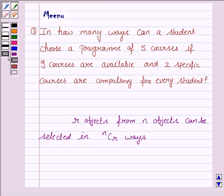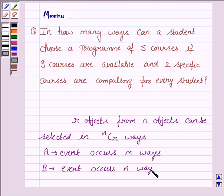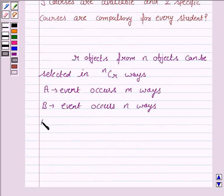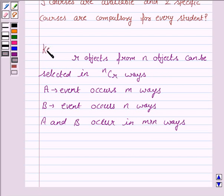We also need to know the fundamental principle of counting, which says if event A occurs in M different ways and event B occurs in N different ways, then event A and B occur in M into N ways. This knowledge will work as our key idea.